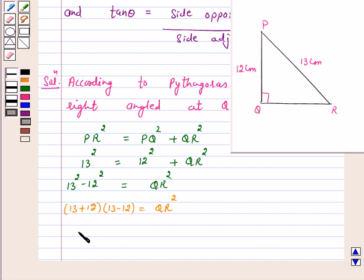This implies 13 plus 12 into 13 minus 12 is equal to QR square. So this is equal to 25 into 1 is equal to QR square, which implies QR is equal to 5 centimeter.